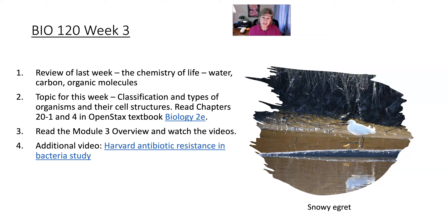We start out with classification with the three domains. Domain Eukarya includes plants, animals, fungi, and protists — that's most of the life forms on the planet. All organisms in domain Eukarya are called eukaryotes. We have complex cells with organelles like a nucleus. An organelle is a little compartment in a cell. We have nuclei, mitochondria, chloroplasts if we do photosynthesis, endoplasmic reticulum, Golgi apparatuses, and so on — different little compartments in our cells.